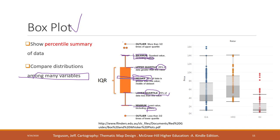Since outliers are excluded, the maximum and minimum values on a box plot are not the absolute largest or smallest values. Outliers are defined as values more than 1.5 times the interquartile range above the upper quartile or below the lower quartile. Data points outside that range are considered outliers.